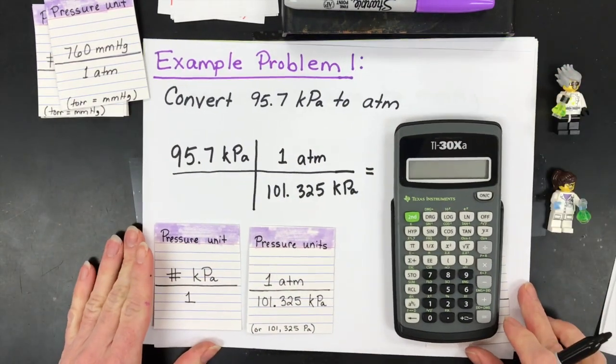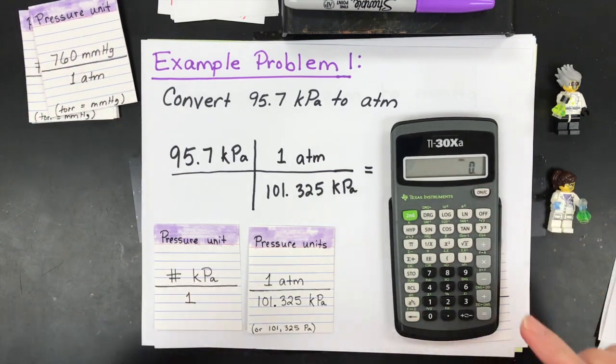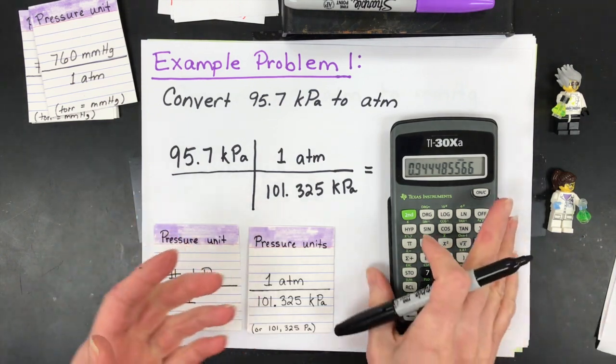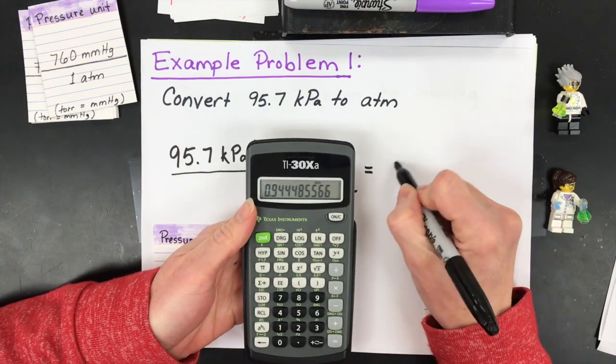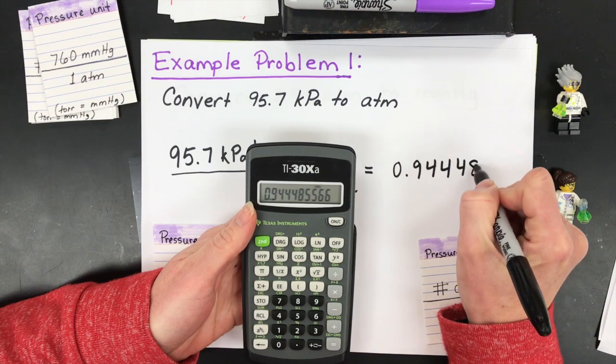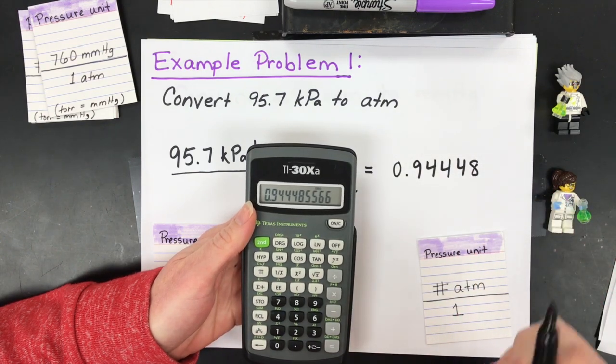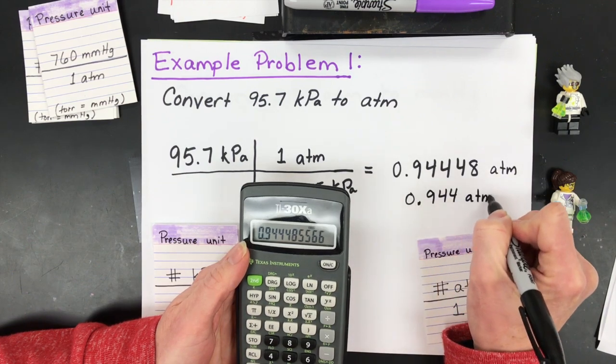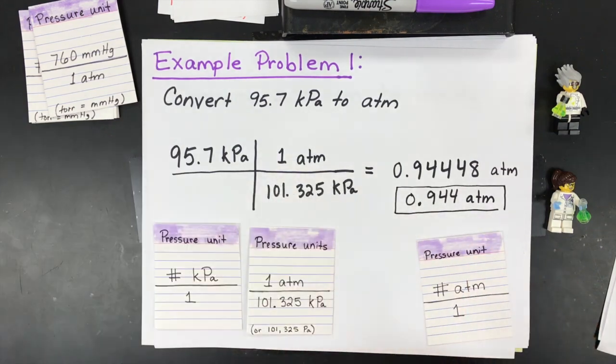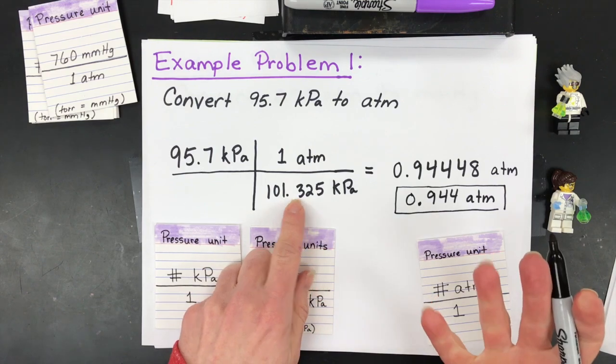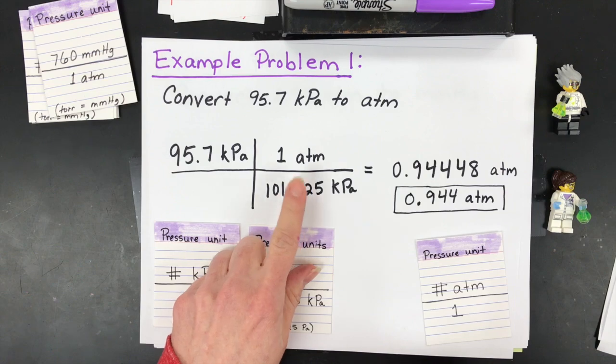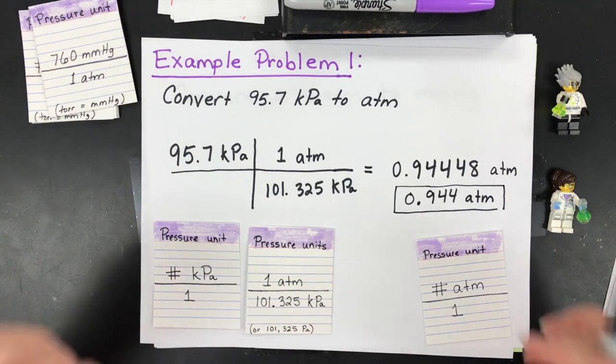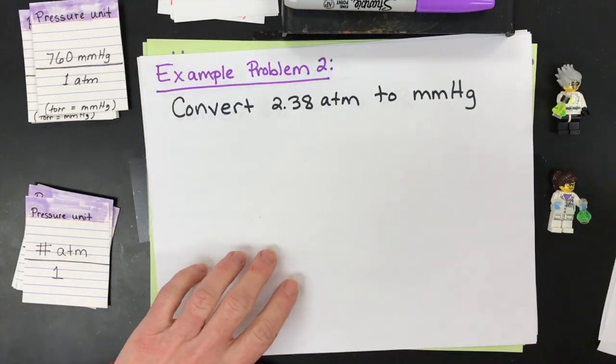So grab your calculator. Let's calculate the answer. 95.7 divided by 101.325 equals 0.94448. That's a lot of digits, so what I'm going to do is only keep three. My goal here is to keep just three significant figures. This would be 0.944 atm. Why am I keeping only three? Because my given here had three sig figs and this has six if not more. Usually we don't worry about how many significant figures are in the conversion, just in the given amount because you measured this in lab or in real life. That's the value we're going to use to create the significant figures at the end.